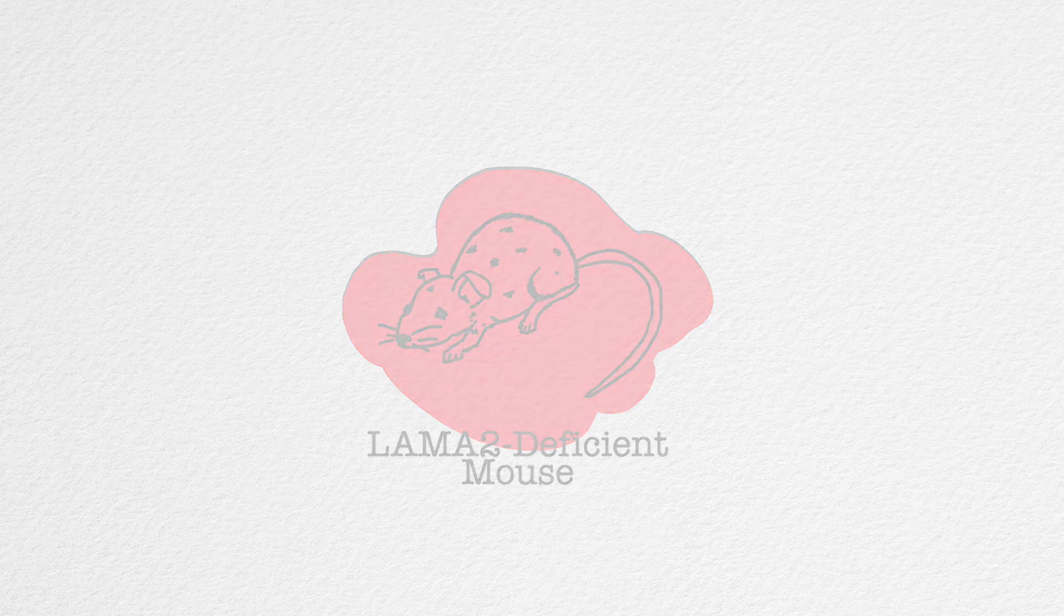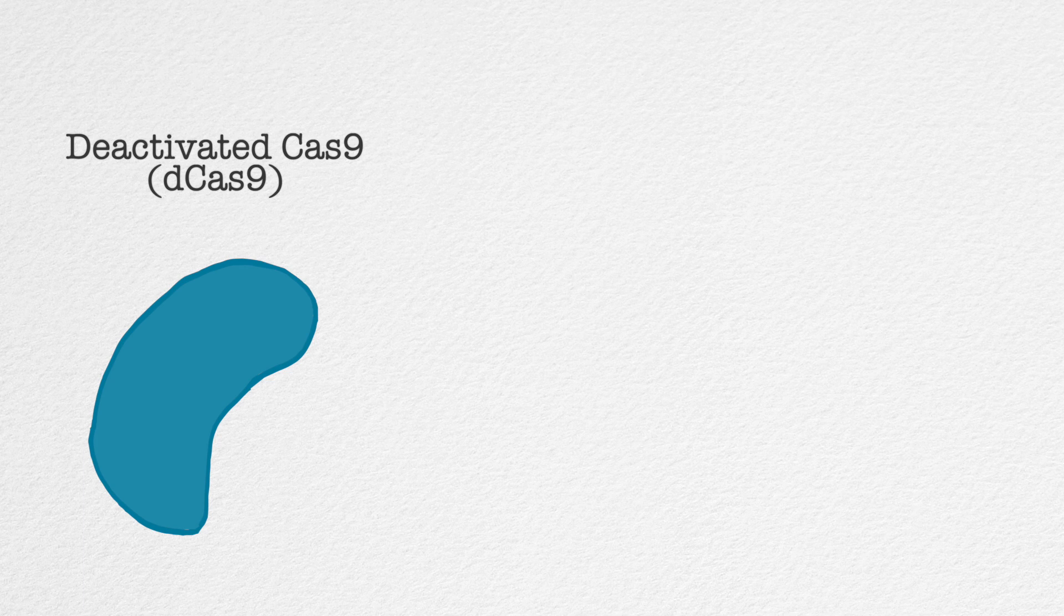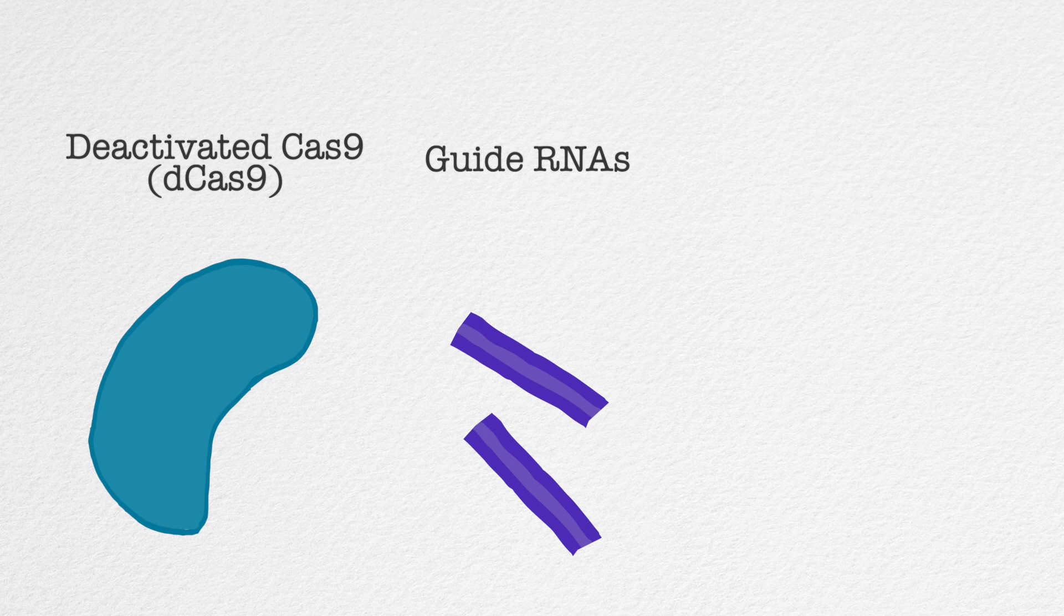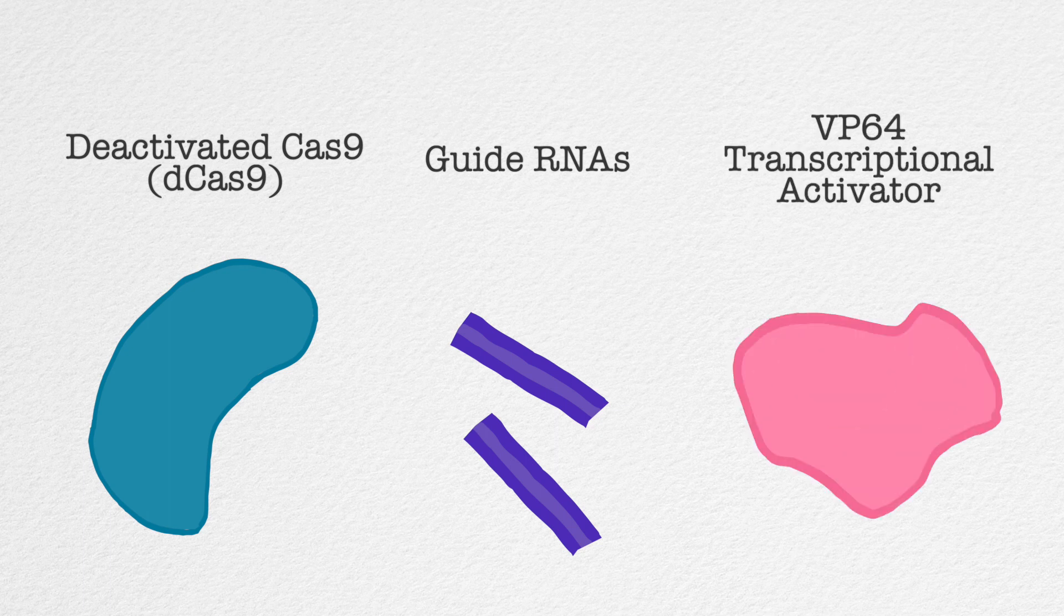How did we do that? We used a virus called AAV9 to deliver the three components of our CRISPR activation system: one, deactivated Cas9, which does not cut DNA; two, guide RNAs that will guide that deactivated Cas9 to LAMA1 promoter; and three, the VP64 transcriptional activator, which will boost the expression of LAMA1.